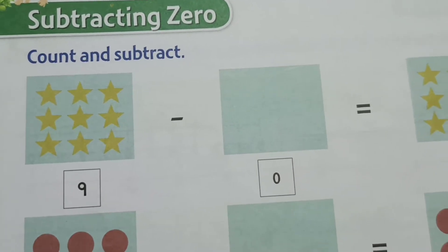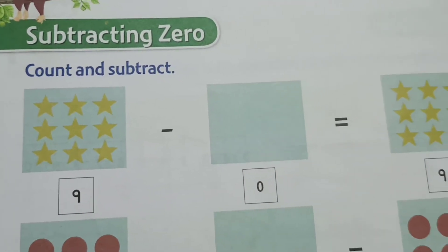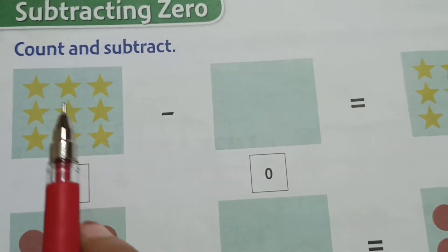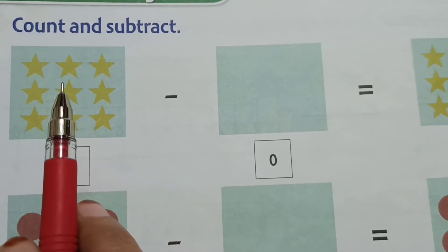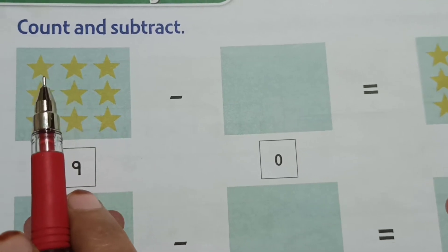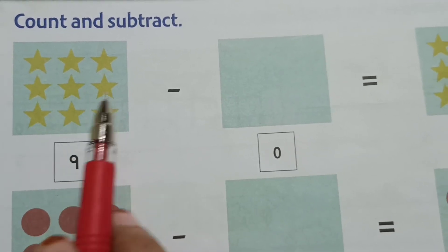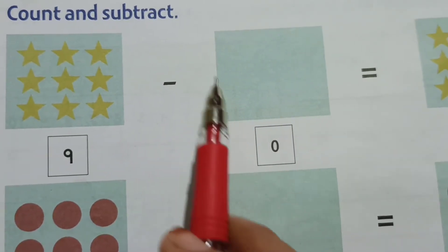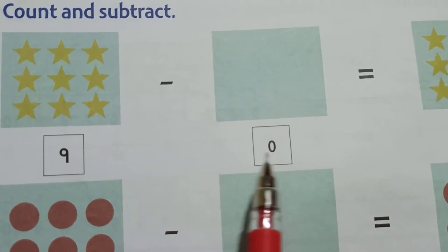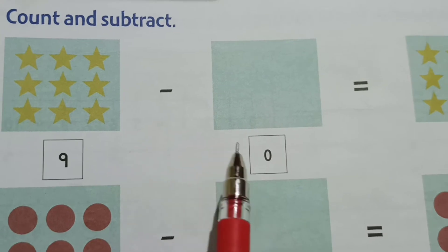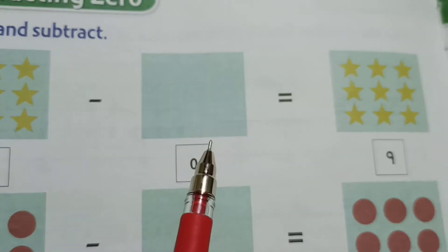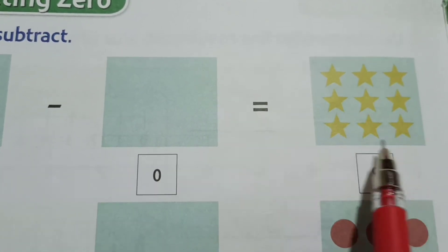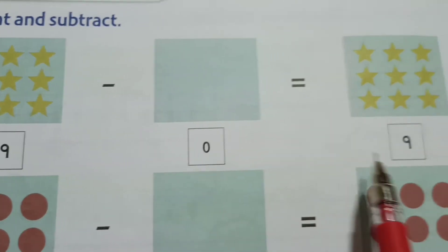Now in the previous class we have added by 0, so the number which we add with 0, the same number remains. In the same way you can see here stars. Count the stars: 1, 2, 3, 4, 5, 6, 7, 8, 9. So 9 minus, in this box there is nothing, so it is 0. 9 minus 0, so what will be the answer? 9 minus 0 will always be 9. The number will be same. So 9 minus 0 is 9.